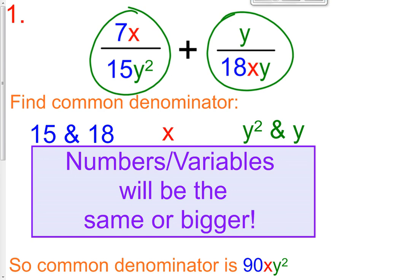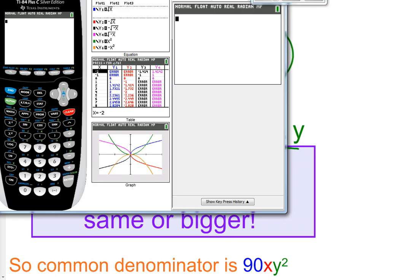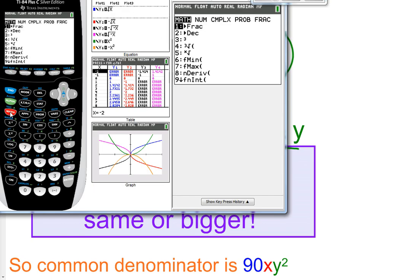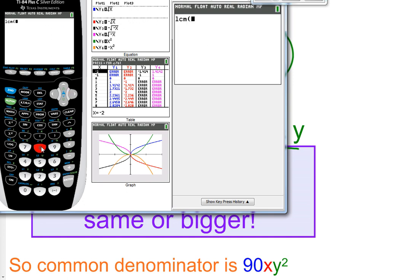We have to get common denominators, so each and every one of our factors has to be common. We have to get a common number between 15 and 18, no x's and 1 x, and we have y² and y to the first. To find the common denominator, we can do this quickly by putting it in our calculator — press the math button, scroll over to num, go down to number 8 for LCM. The least common multiple between 15 and 18 is 90.